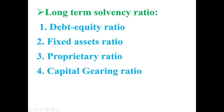The Long Term Solvency Ratio has four components. First, Debt to Equity Ratio. Second, Fixed Assets Ratio. Third, Proprietor Ratio. Fourth, Capital Gearing Ratio. This is the Long Term Solvency Ratio.